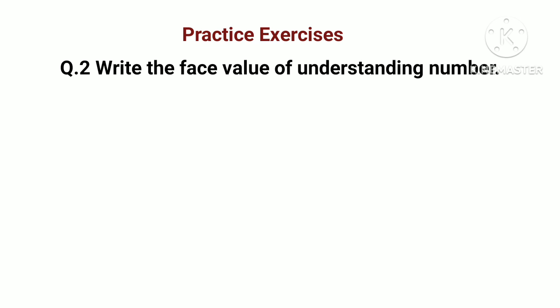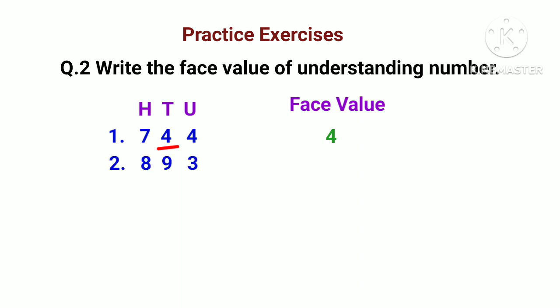820 — underlined number is 0, 0 comes in the 1s place, so place value is 0. Question number 2: write the face value of the underlined number. 744 — here 4 is underlined, so 4's face value is 4. 893 — number 8 is underlined, so 8's face value is 8. 901 — so 1 is underlined, so 1's face value is 1. 325 — so 2 is underlined, so 2's face value is 2.